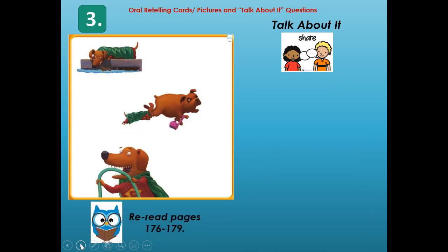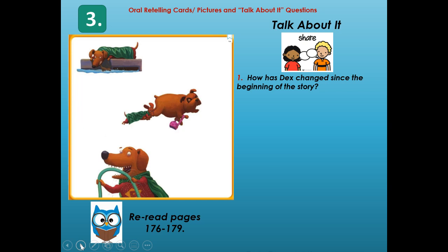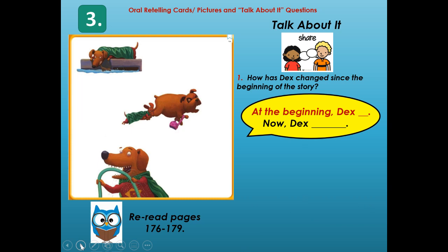You can reread about this on pages 176 to 179. What is Dex doing? How has Dex changed since the beginning of the story? Think back to the beginning of the story — Dex was... and now, what's happened? At the beginning, Dex. Now, Dex. How has he changed?